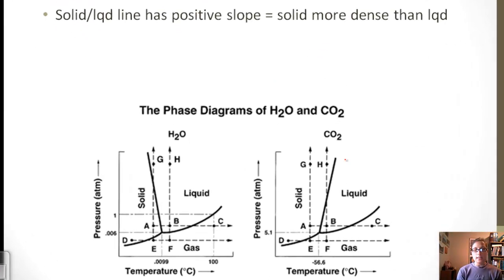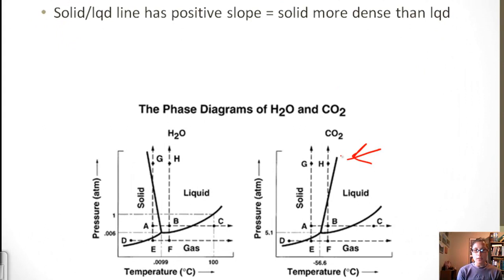Here, the solid-liquid line is a positive slope. Here's our solid-liquid line for CO2, and here you can notice our solid-liquid line for water has definitely a negative slope, and here we have a positive slope. What this means is that solid is more dense than liquid for CO2. The reason CO2 is so interesting is because at a pressure of 1 atmosphere, it will sublimate. At standard pressure, CO2 will go directly to a gas.